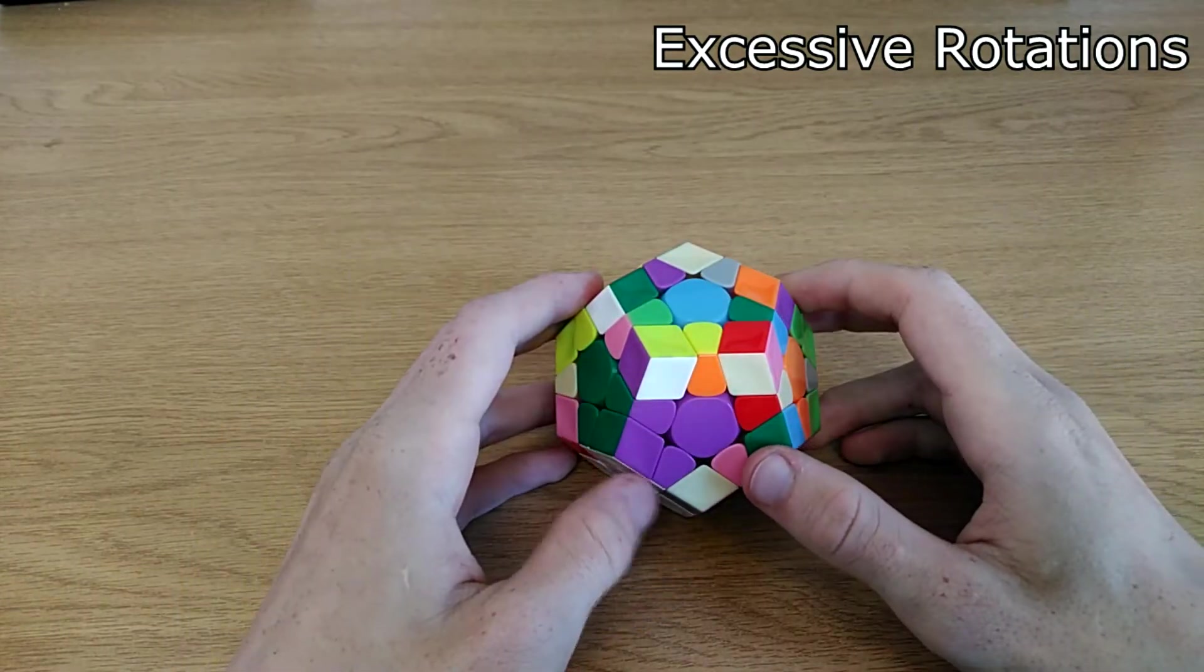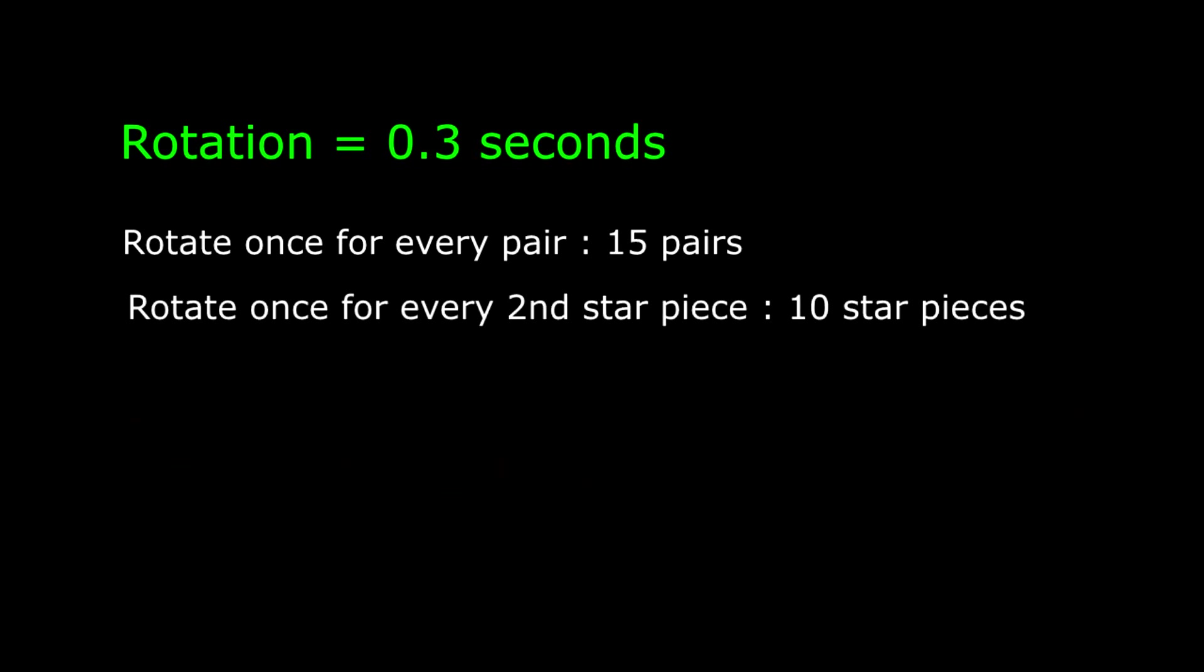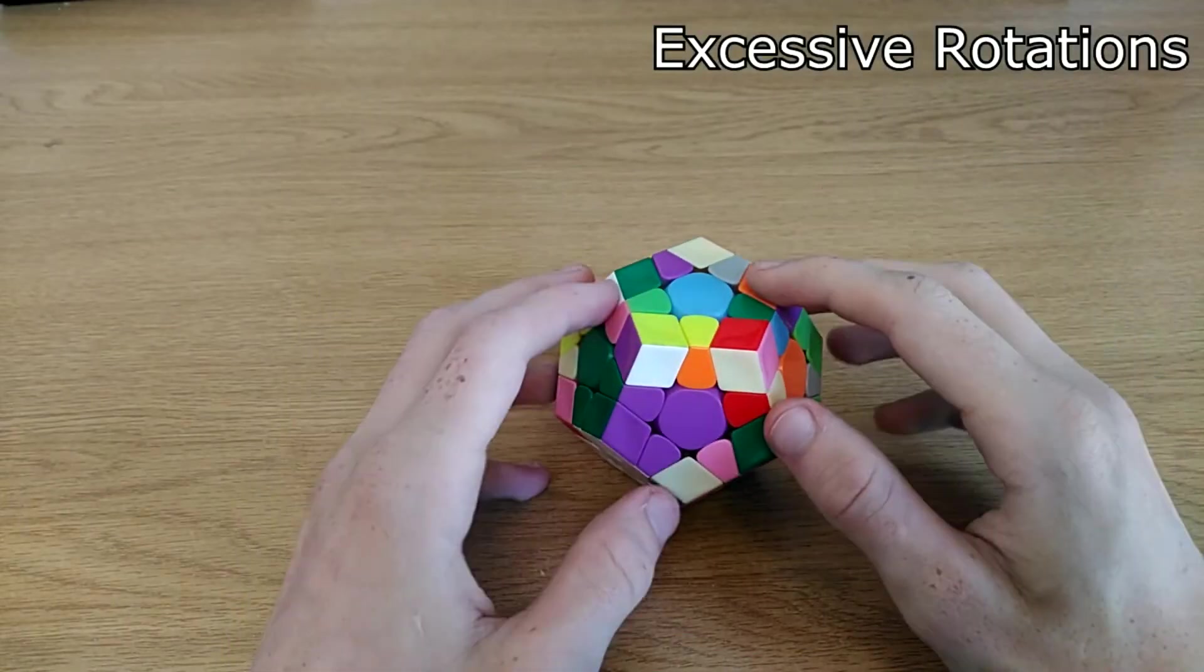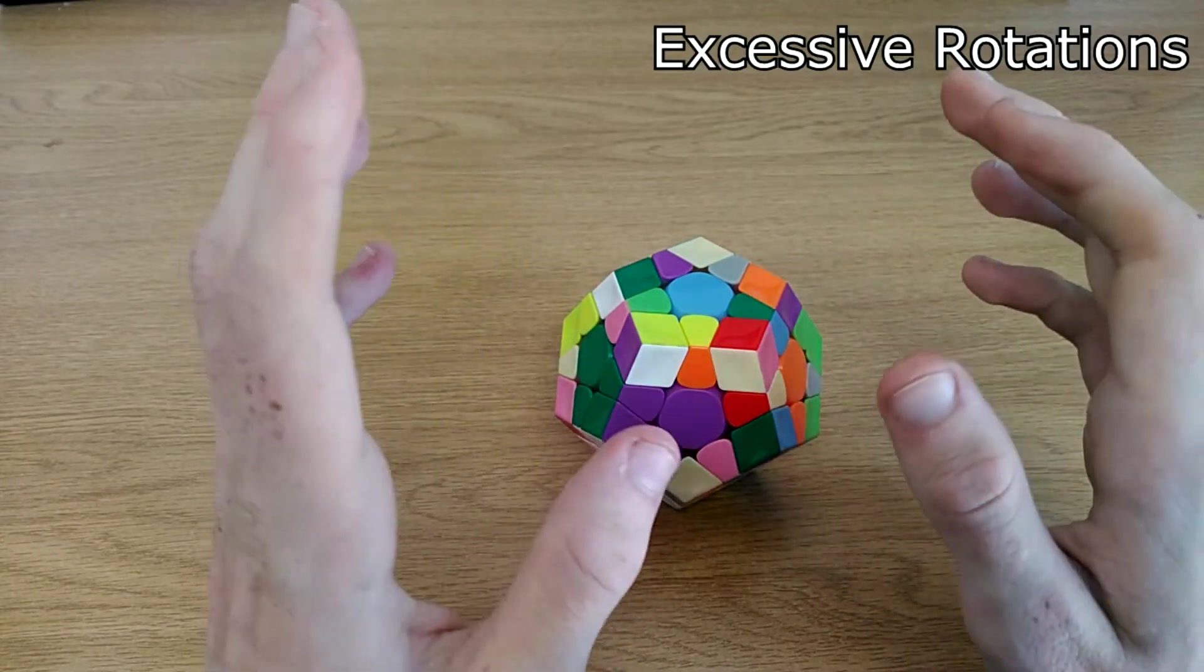Just so that you know how much of an effect rotations have, let's say for the sake of argument, it takes 0.3 seconds for a rotation, and let's say you rotate one time excessively per pair, so one time too many, and once for each second star piece, then you will have a total time wasted of 6 seconds because of the 15 pairs and 10 star pieces, which is actually a lot. Trust me, if you reduce your rotations, your times will go down drastically.